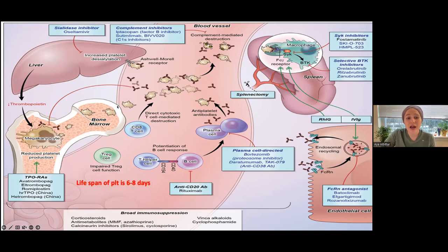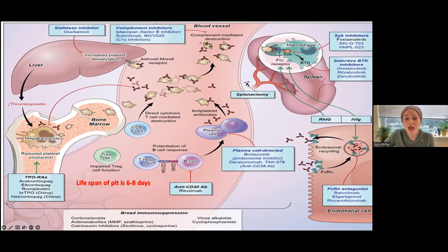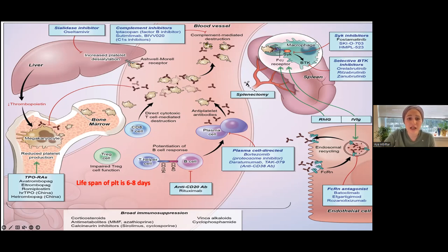In ITP, antibodies develop against certain proteins on both megakaryocytes and platelets, affecting both the production pathway and the circulating platelets, resulting in low platelet counts. Splenectomy cuts out what's eating your platelets, expanding the lifespan of your platelets — but it's not solving the underlying problem.